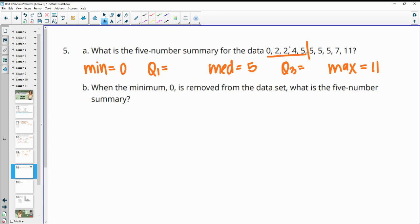Then we would look at the lower half of the data, find the middle of that. That's our Q1. Upper half of the data, find the middle of that. That's five. That would be our Q3.